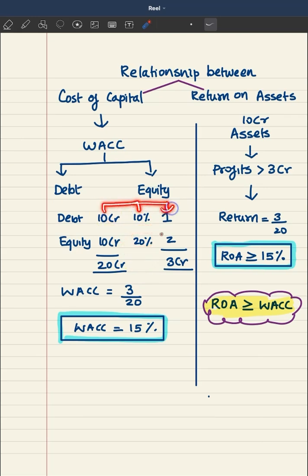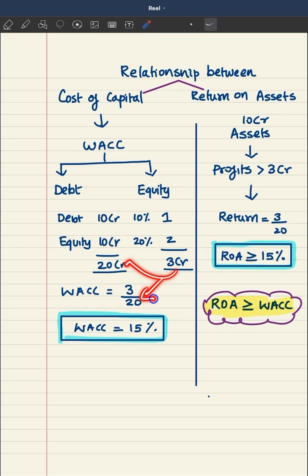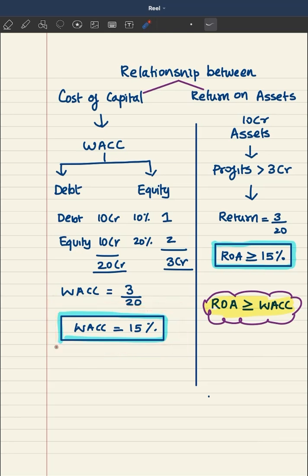The cost of 10 crore debt at 10% is 1 crore. The cost of 10 crore equity at 20% is 2 crore. So for having raised 20 crore in total, their cost is 1 plus 2, which is 3 crore. So 3 crore divided by 20 crore gives the overall cost of capital — 3 by 20 — that is 15%. So 15% is the cost of capital for this business.